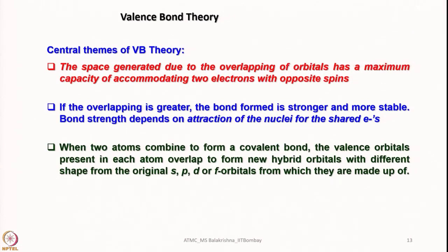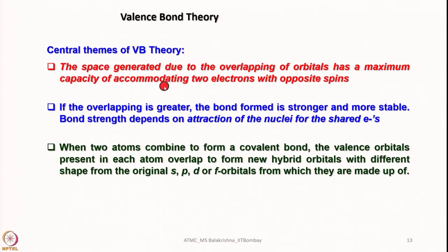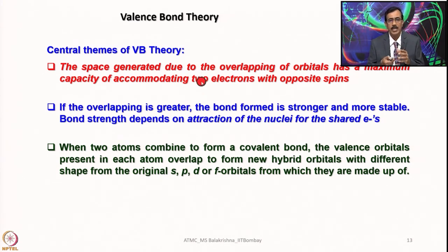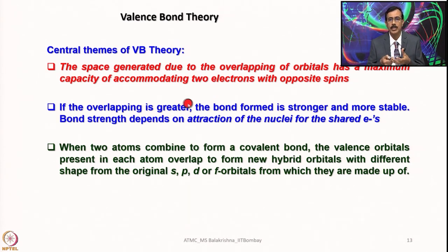Let us now look into valence bond theory. The central theme is: the space generated due to the overlapping of orbitals has a maximum capacity of accommodating two electrons with opposite spins. When you overlap orbitals from two atoms, that region can accommodate two electrons with opposite spins — meaning electrons are localized between two atoms. If the overlapping is greater, the bond formed is stronger and more stable. Bond strength depends on attraction of the nuclei for the shared electrons. If electronegativity and orbital size are comparable, the two nuclei can come very close and establish a stronger bond.